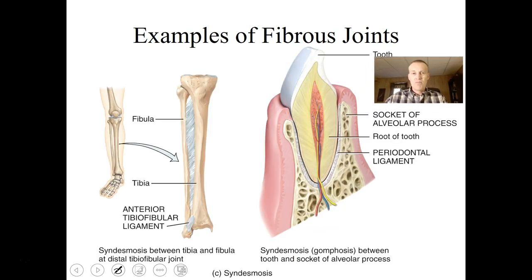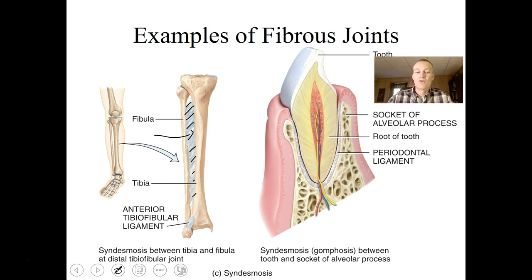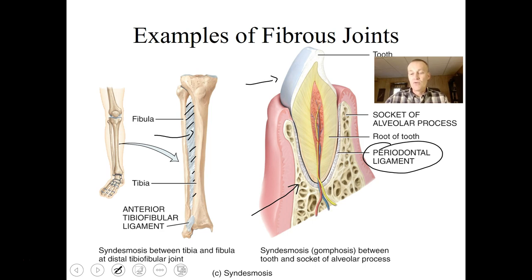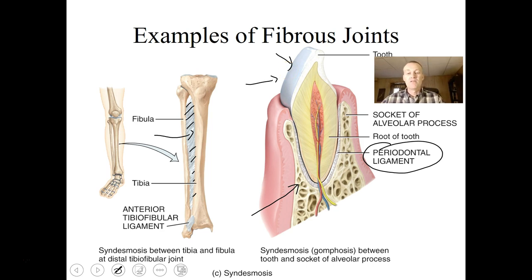More examples of fibrous joints: you might have one between the fibula and tibia, where the material creates a joint that's not very flexible — very little movement, but it connects those bones together to make them stronger. And your teeth — when they articulate with your bone, there is a periodontal ligament that essentially puts your teeth in place. You can break that ligament by putting pliers on the crown and ripping it out, but it does a pretty good job of holding up.